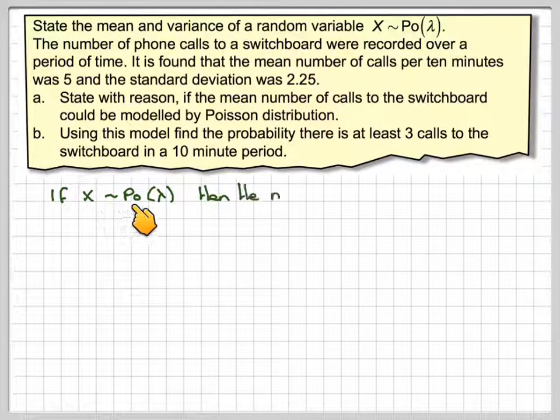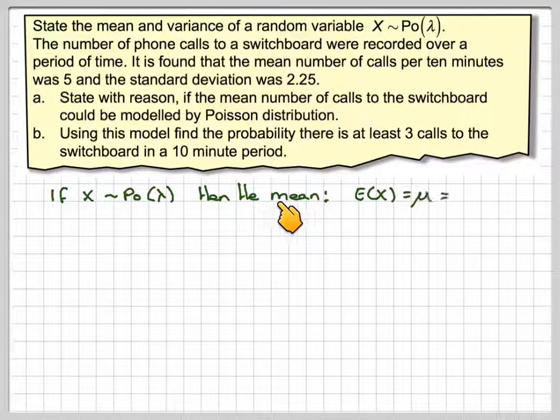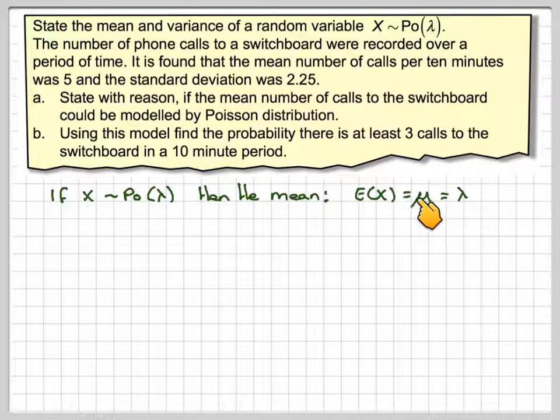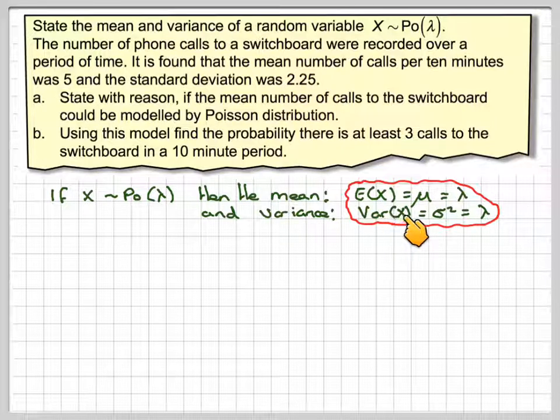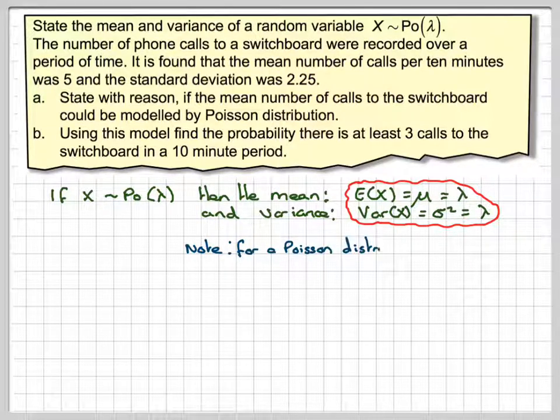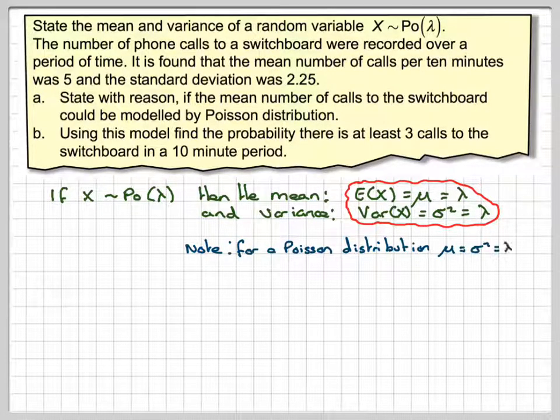So if x belongs to Poisson lambda then the mean and these are given without proof E of x is equal to mu is equal to the parameter lambda. And also the variance of x sigma squared is also equal to lambda. So this is quite important. Note for Poisson distribution that the mean is equal to the variance which is equal to lambda.